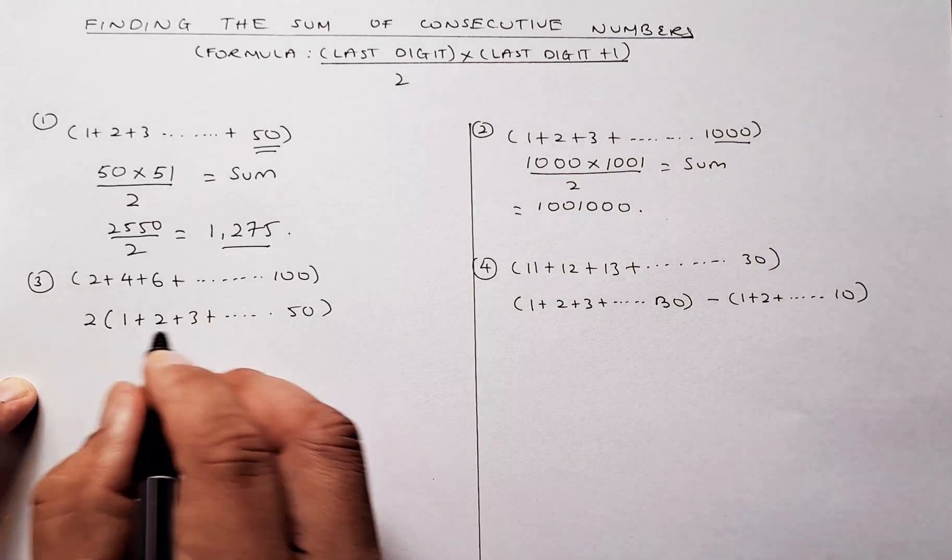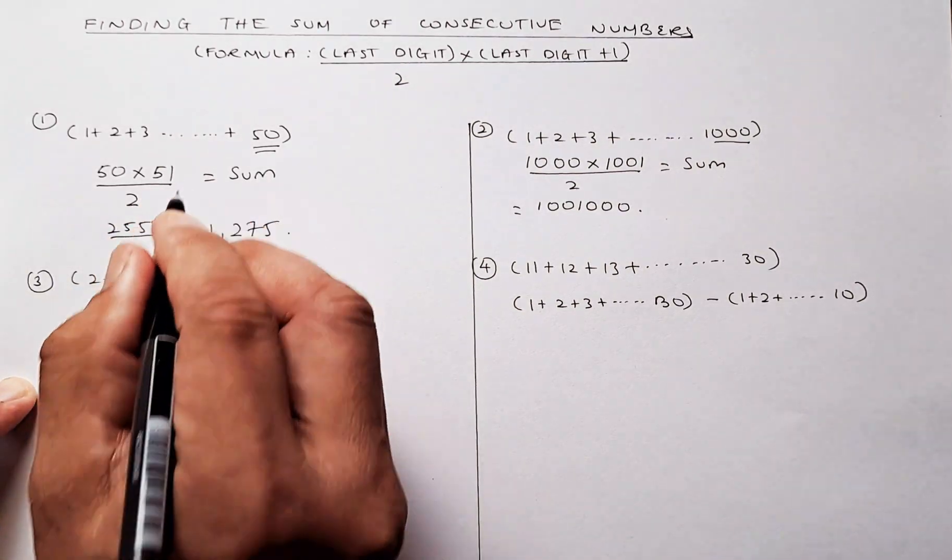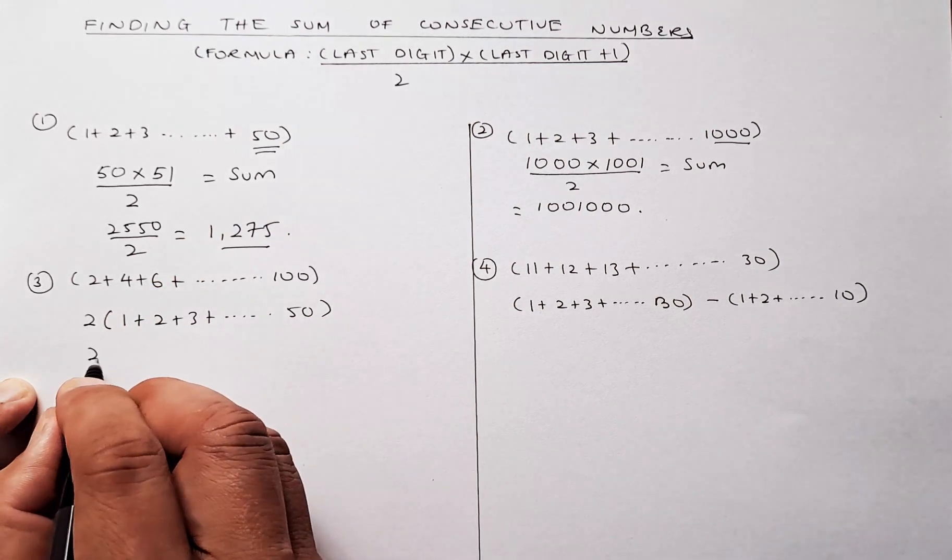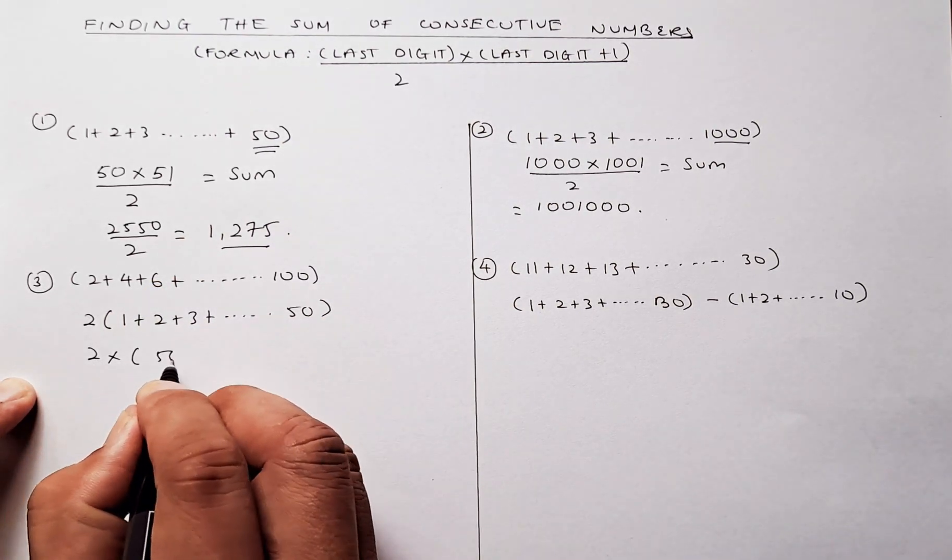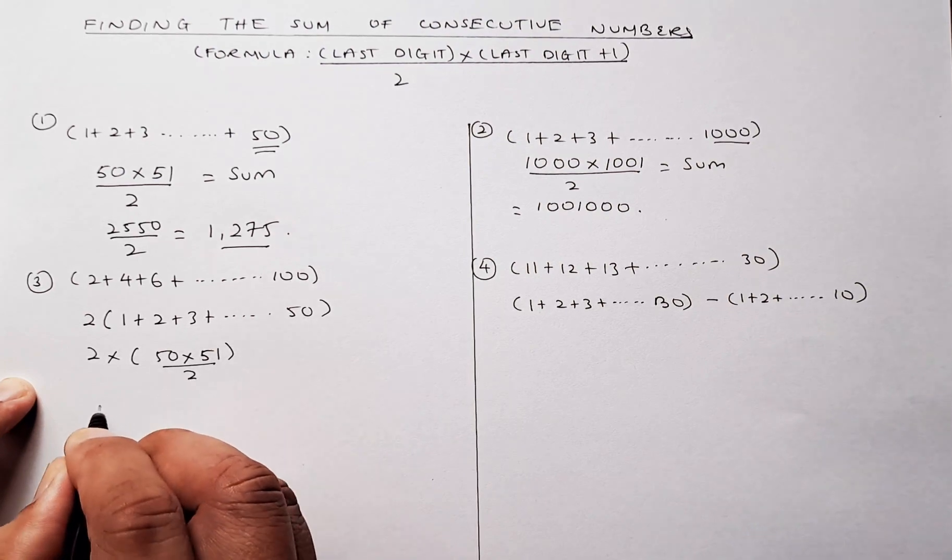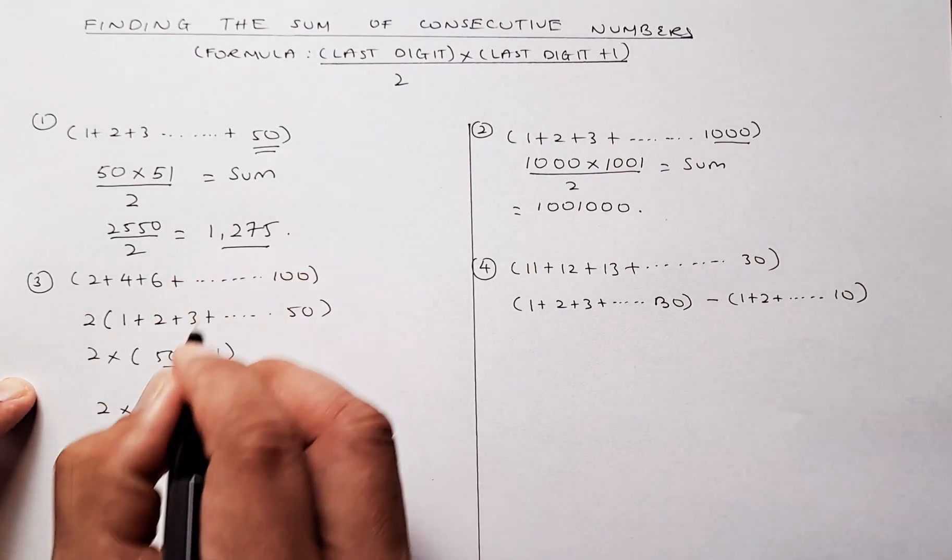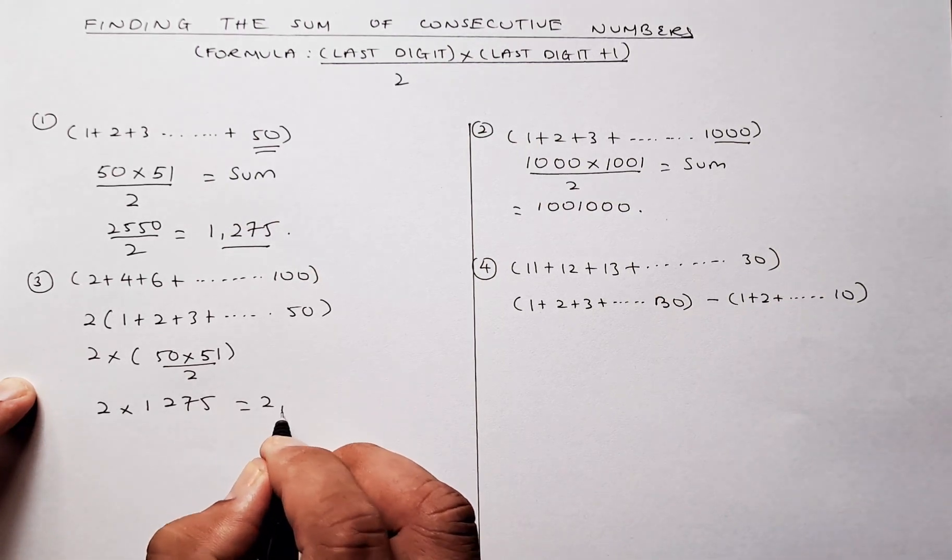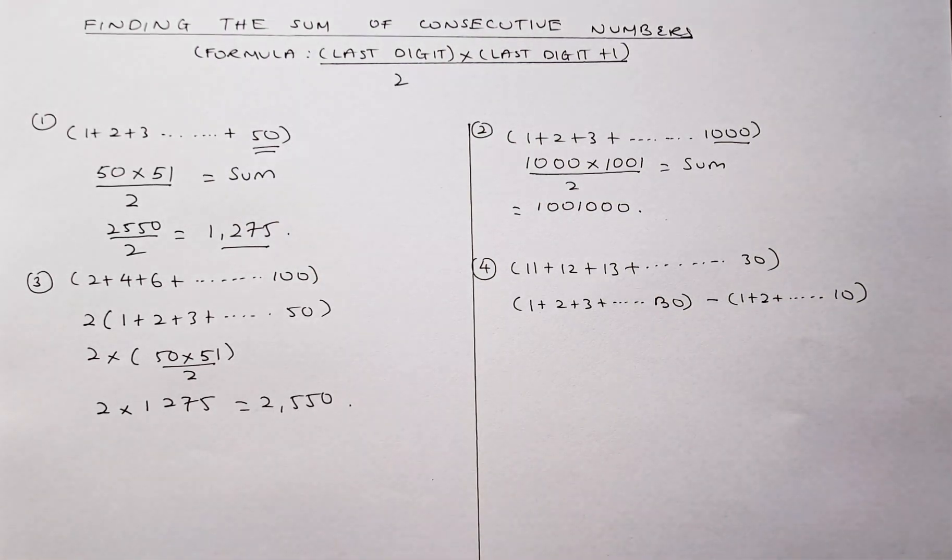And you have found the first example, this part of the equation, the same as the first one. So 2 multiplied by 50 times 51 divided by 2. So it's 2 times this number, 1,275 and the answer is 2,550. So this is just a modification of the first example.